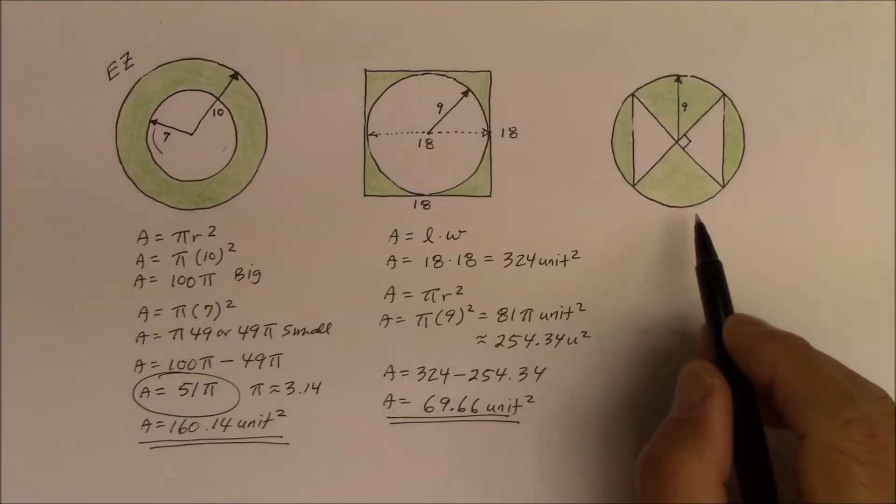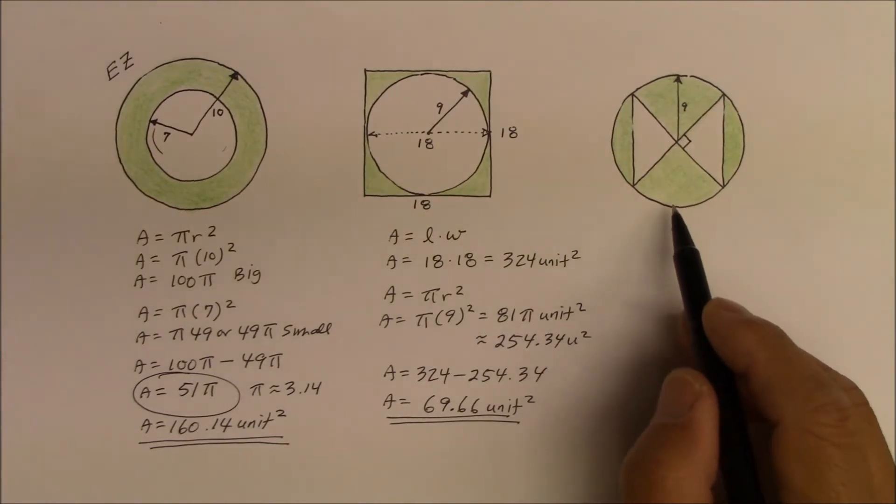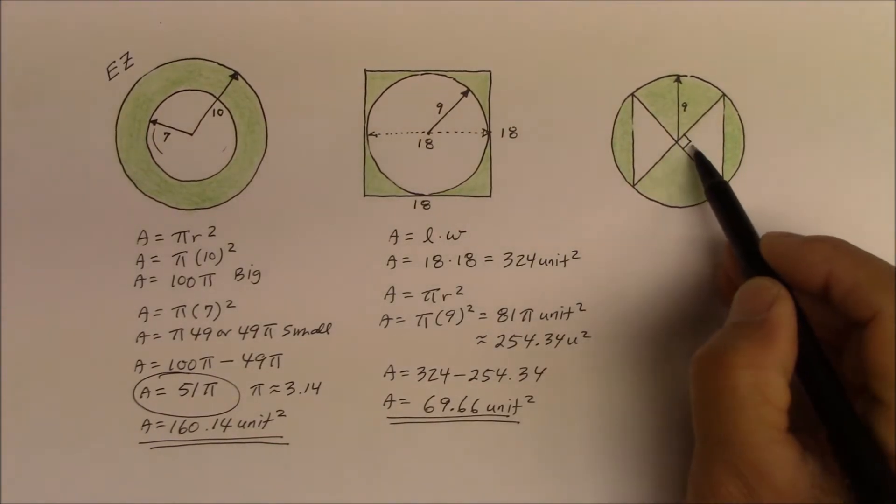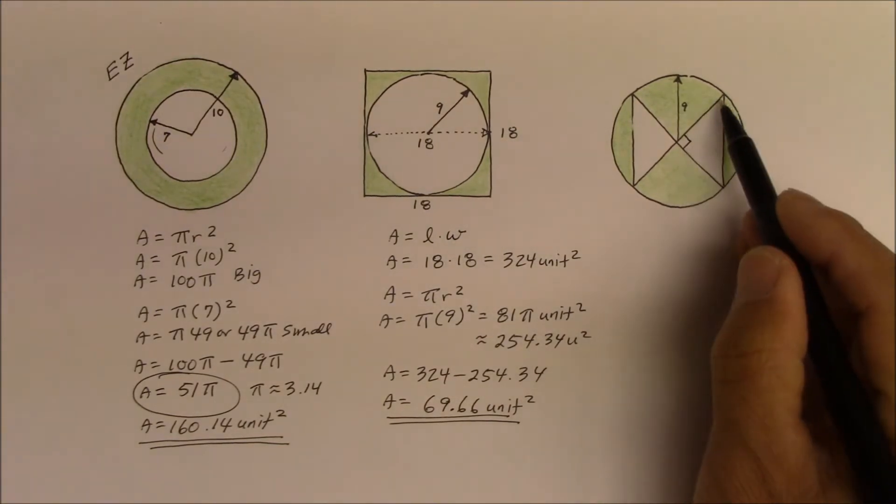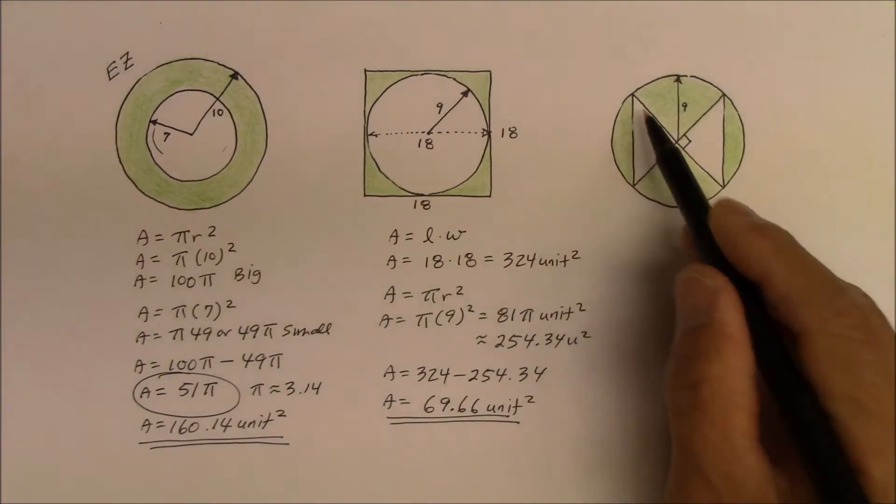All right, the third one, that was a little tricky. That little notation of 90 degree angle actually turned out to be a crucial factor in finding the area of these identical triangles.